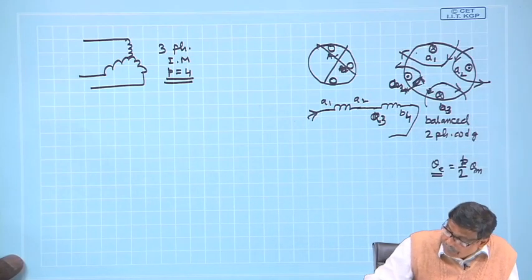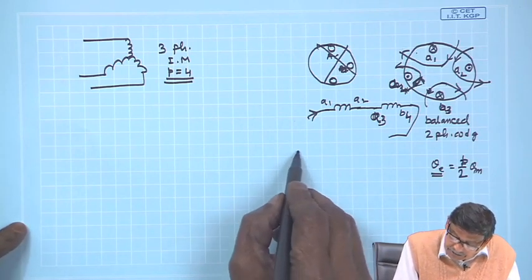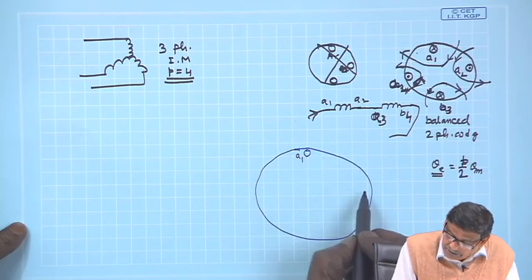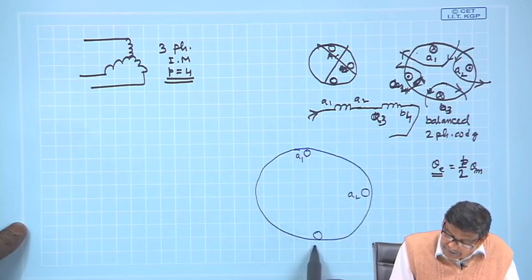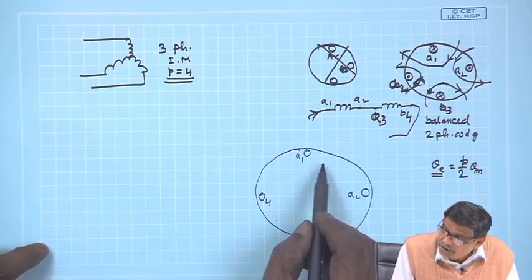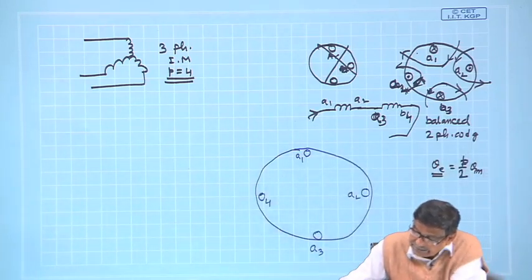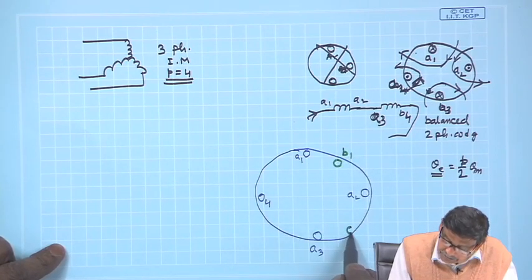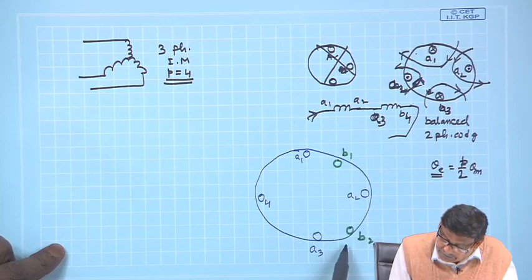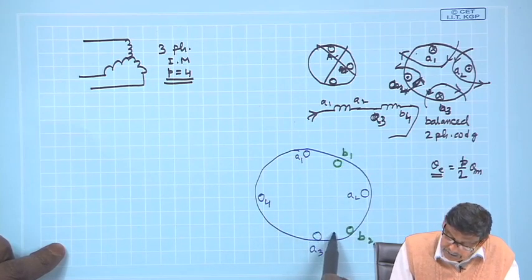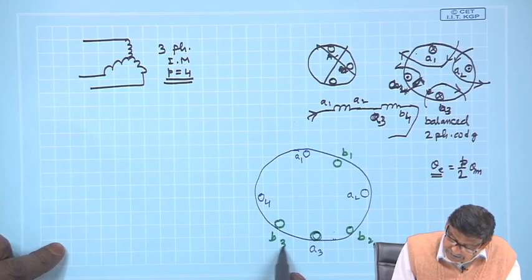Therefore, drawing it clearly: this is the A-phase coil A1, A2, A3, A4. The B-phase coil starts 45 degrees after this. So here it will be B1, here B2 — 45 degrees apart — and continuing: B1, B2, B3, and B4, the same pattern shifted by 45 degrees mechanical for four poles.